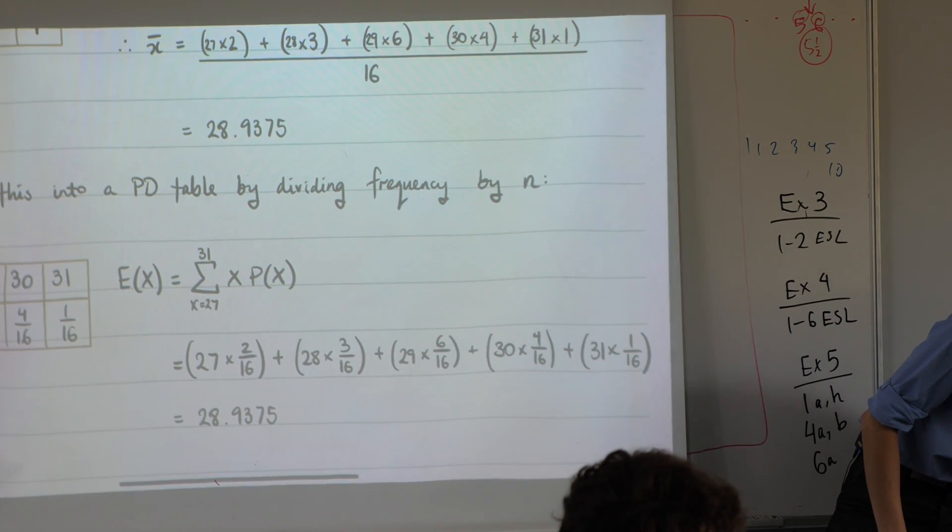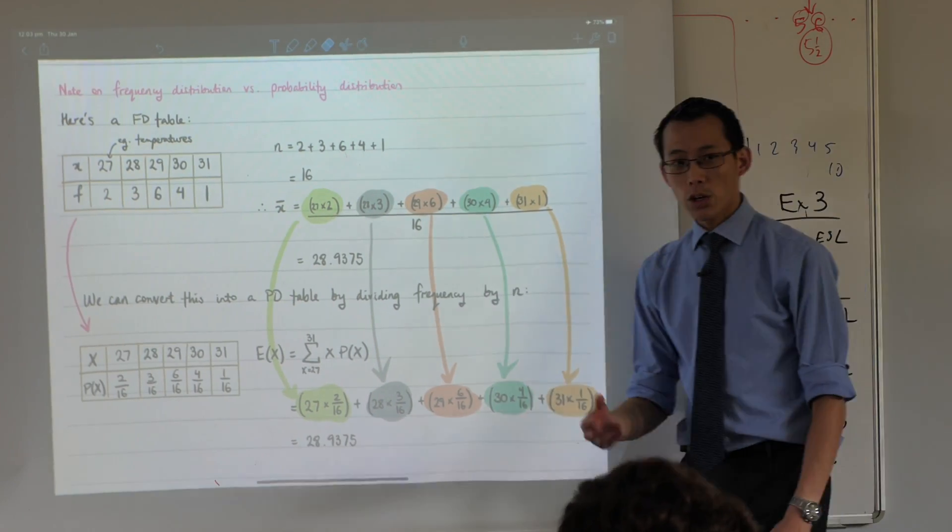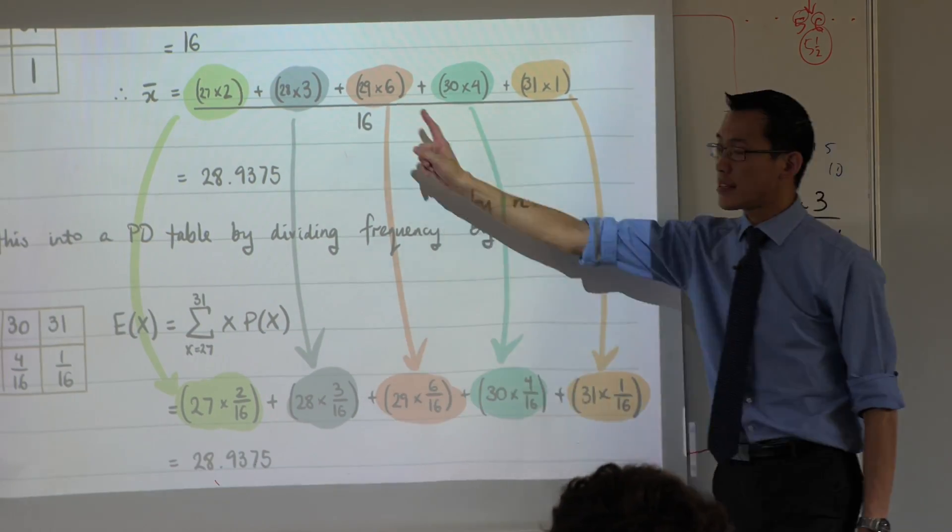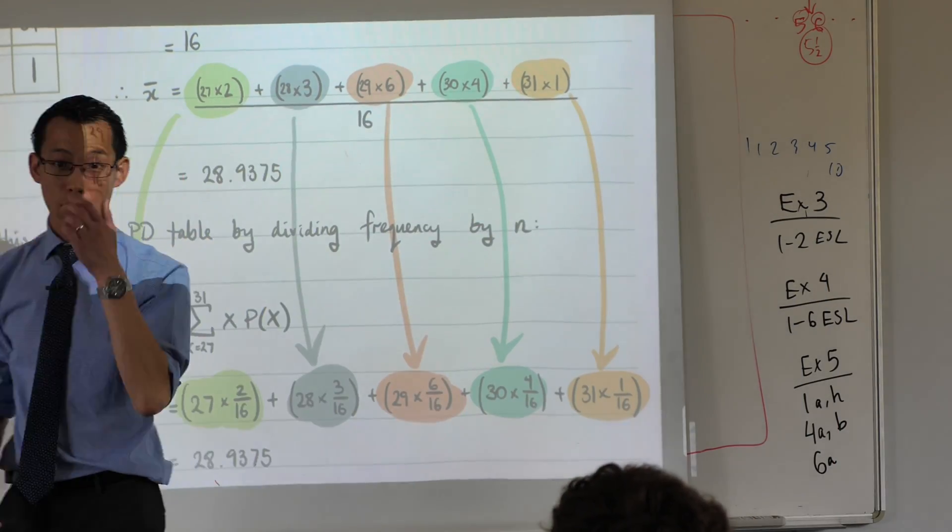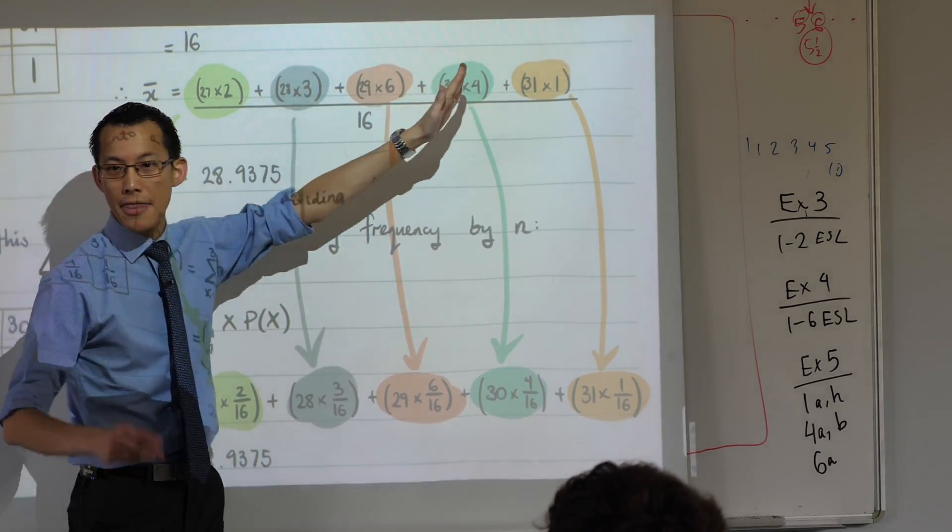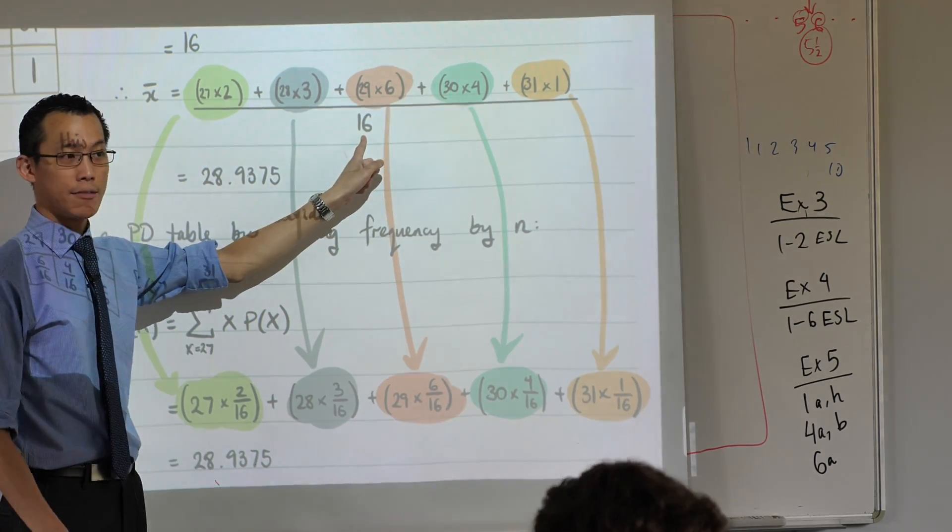Look carefully. I'll zoom in just a little bit more. This is how we calculated the mean. We said, oh I had two lots of 27, three lots of 28, I add them all up and then finally I divide.